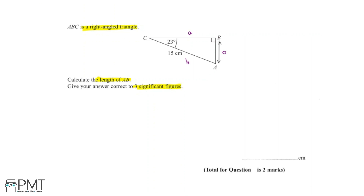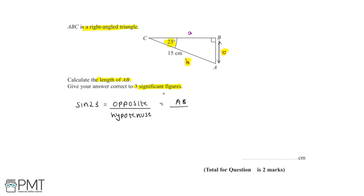We're asked to find length AB. We need to see which trigonometric identity has what we need. We have one known angle and one known side, and there's an unknown side length that we need to find. We need to find the opposite side, we're given the hypotenuse, and we know the angle. So this trigonometric identity has to link opposite and hypotenuse together, and we can correctly identify that this identity is sine, because sine is opposite over hypotenuse.